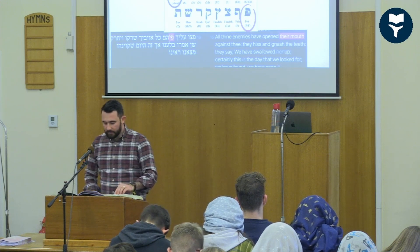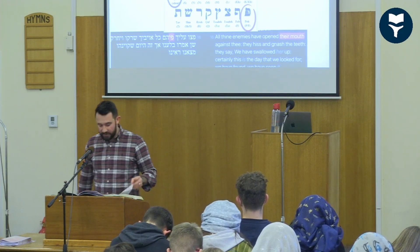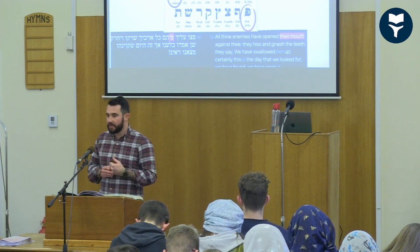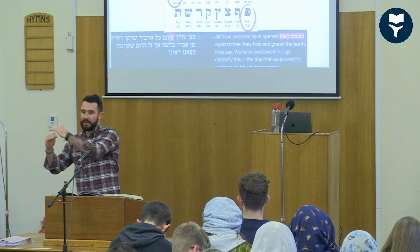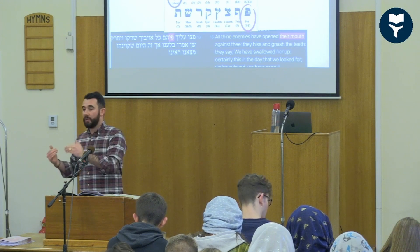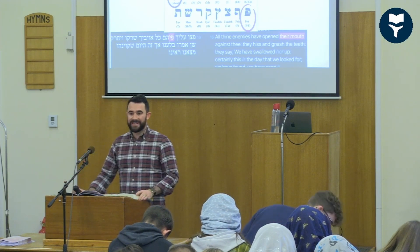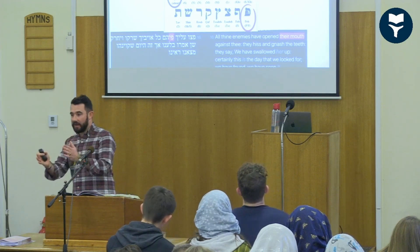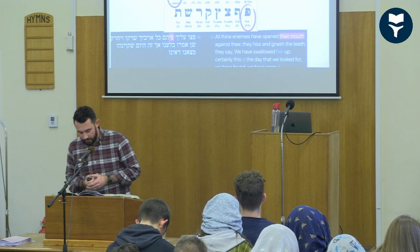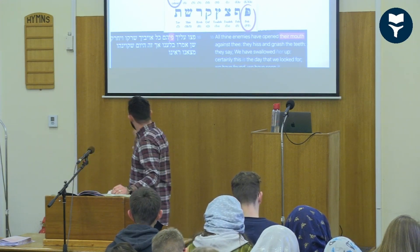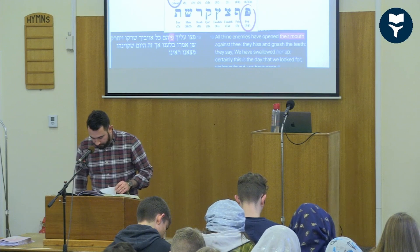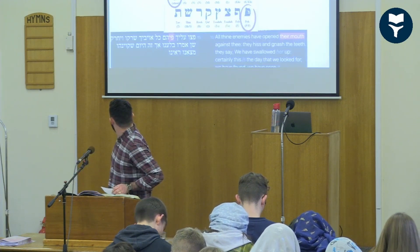In Psalm 119 there are 176 verses and 22 stanzas — one for each letter of the Hebrew alphabet — with eight verses per stanza. Eight times twenty-two equals 176. Within that psalm we get these two Hebrew letters Ayin and Pe. Let's go to verse 121, where in the correct order the Ayin comes first, unlike in Lamentations chapters two, three, and four.